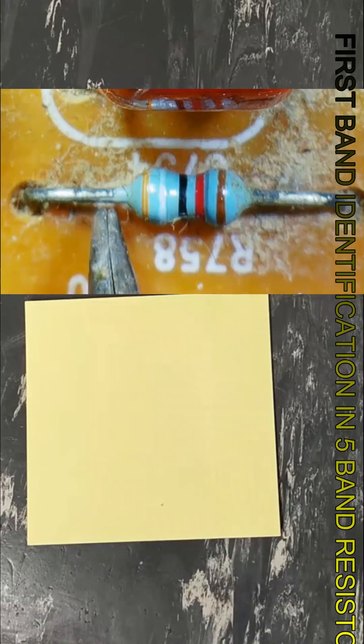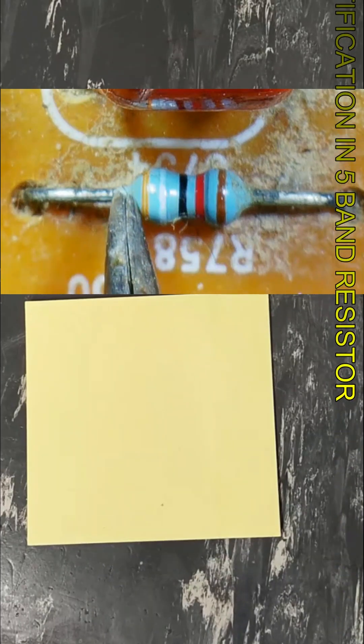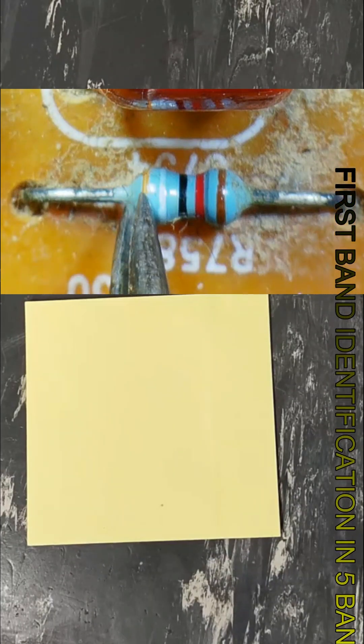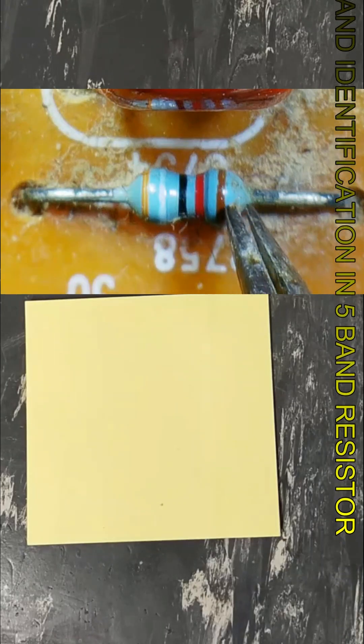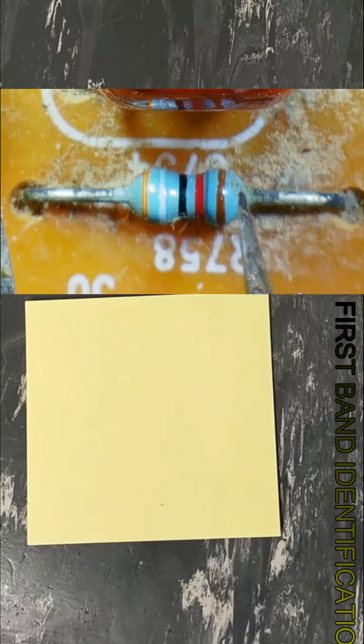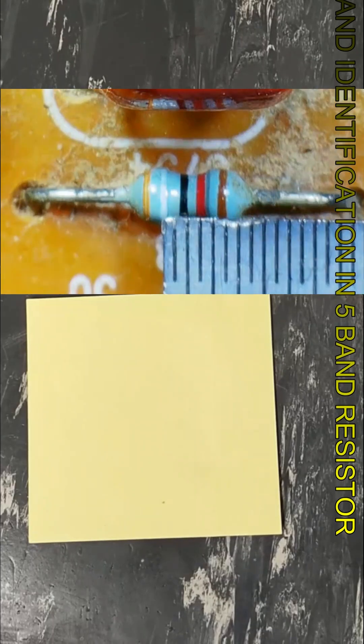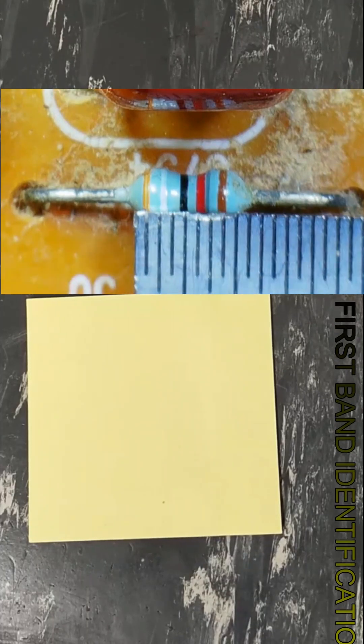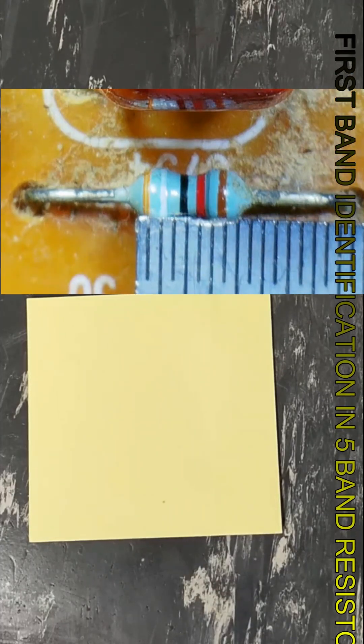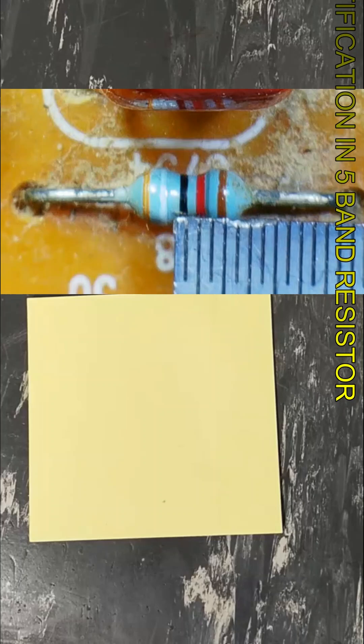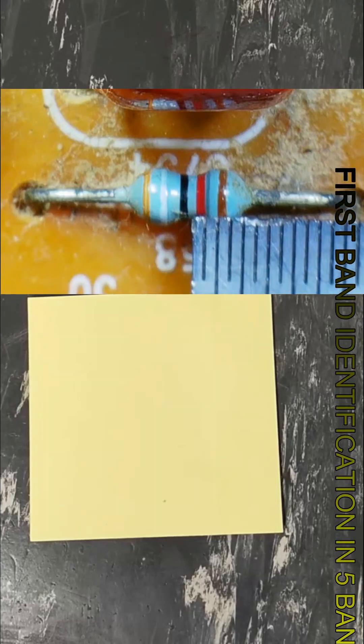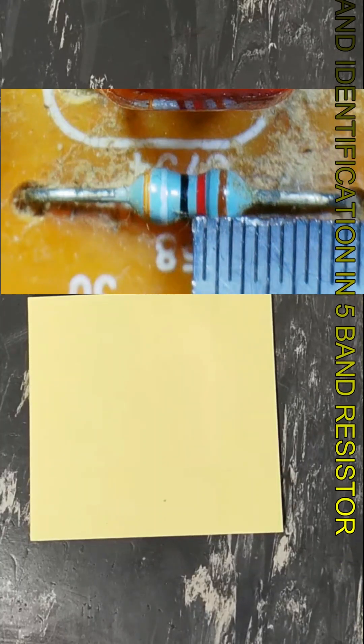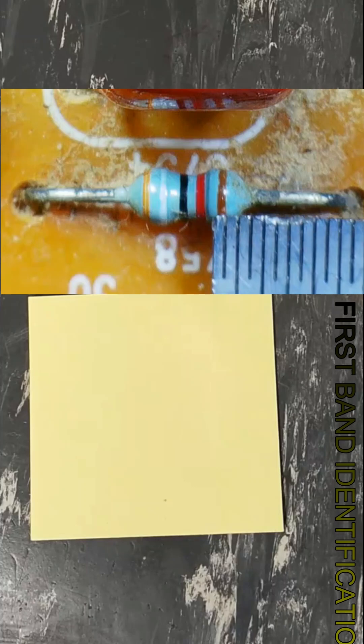Which is the first band? The first band starts from this corner, closer to this lead. On this side, we can see there is a gap. This is a very small resistor. If we check the gap between bands, all bands are at the same distance. Only this band is distant from the other bands. It is the tolerance band.